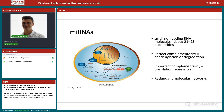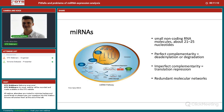MicroRNA can bind either the 3' UTR, the coding sequence, or even the 5' UTR, though it is majorly on the 3' UTR. So it is a post-transcriptional regulation of gene expression. We have basically a redundant molecular network of microRNAs, because a single microRNA can bind different mRNAs, and a single messenger RNA can be bound by different microRNAs.